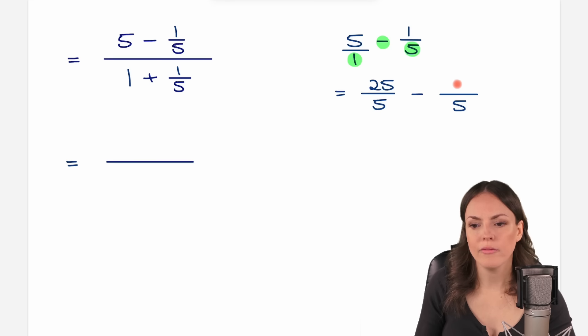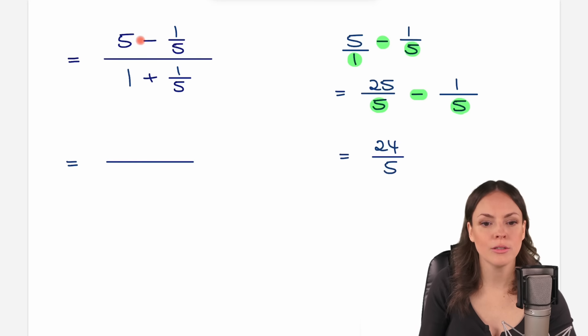Now we are allowed to subtract because we have the same denominators, and the denominator stays, it is a 5, and we only subtract the numerators. 25 minus 1 equals 24. This is our result of this calculation here, so we have 24 over 5 in our numerator.